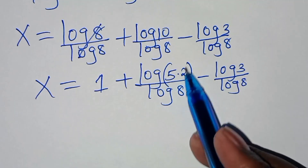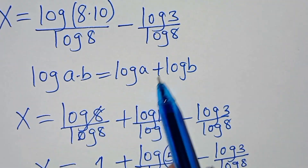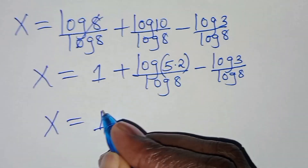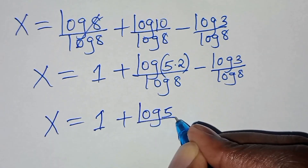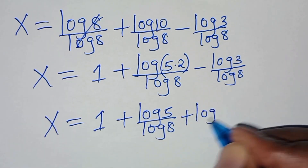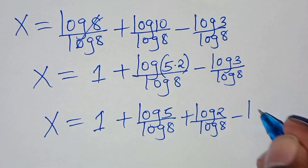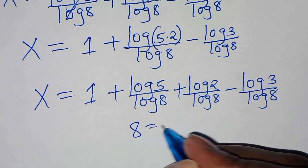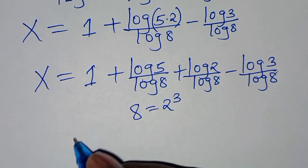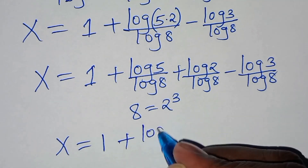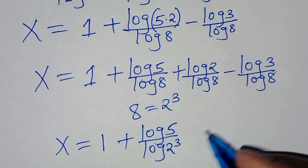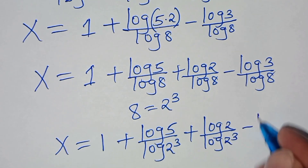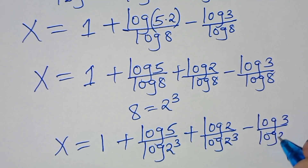The next step is that log 10 can be expressed as log(5 times 2). Again, this is in the form of log(A times B), which we can express as log A plus log B. Therefore, x is equal to 1, plus log 5 divided by log 8, plus log 2 divided by log 8, subtract log 3 divided by log 8. At this point, we can express 8 as 2 to the power 3, so x equals 1, plus log 5 divided by log(2³), plus log 2 divided by log(2³), subtract log 3 divided by log(2³).